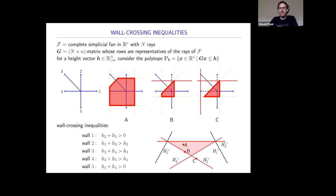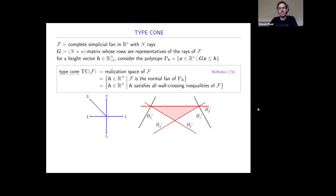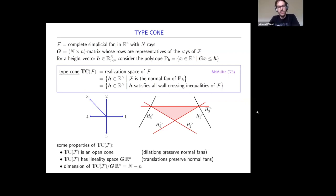Now that we understand which H vectors are good to realize the fan F, let's name them. This is the type cone, studied by Mike Mullen in the seventies. The type cone of a fan F is a realization space of F—the set of height vectors H so that F is the normal fan of p_H—or equivalently, the set of H satisfying all wall-crossing inequalities for F.